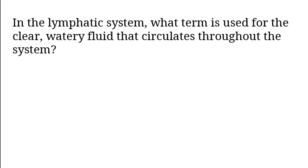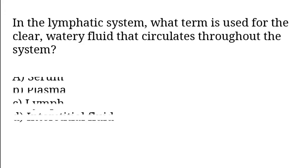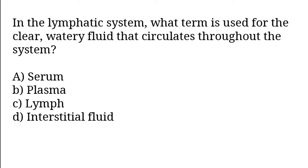In the Lymphatic system, which term is used for the clear watery fluid that circulates throughout the system? A) Serum, B) Plasma, C) Lymph, D) Interstitial Fluid. The correct answer is option C — Lymph.